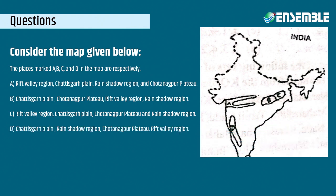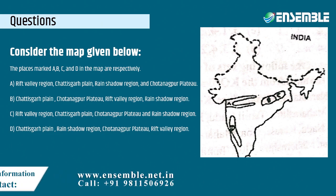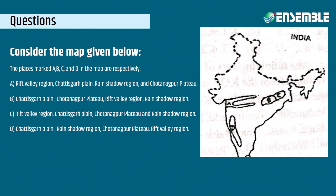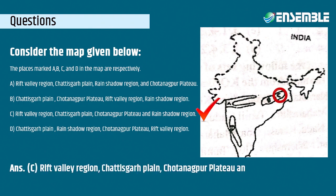The places marked A, B, C, and D in the map respectively are: Option A — Rift Valley region, Chhattisgarh Plain, Rain Shadow region, and Chhattisgarh Plateau. Option B — Chhattisgarh Plain, Chhattisgarh Plateau, Rift Valley region, Rain Shadow region. Option C — Rift Valley region, Chhattisgarh Plain, Chhattisgarh Plateau, and Rain Shadow region. The correct answer is Option C: Rift Valley region, Chhattisgarh Plain, Chhattisgarh Plateau, and Rain Shadow region.